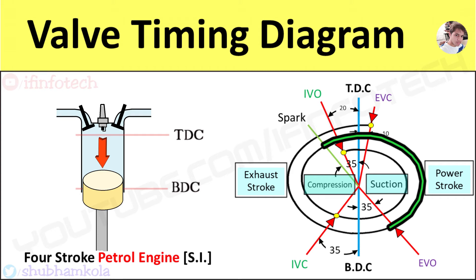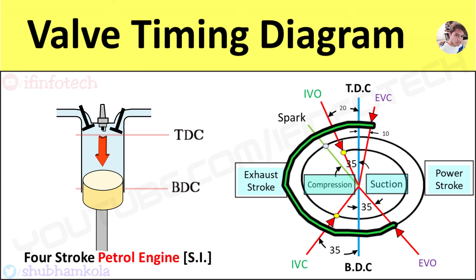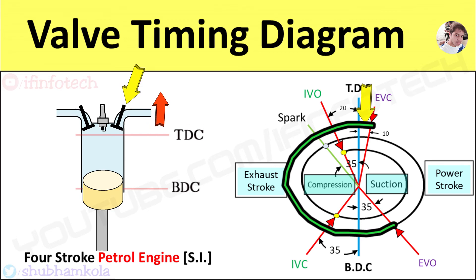Near the end of the power stroke, the exhaust valve opens at an angle of 35 degrees before the BDC position of the piston. This will suddenly bring the cylinder pressure to atmospheric pressure. Exhaust gases are expelled out of the cylinder at constant pressure.